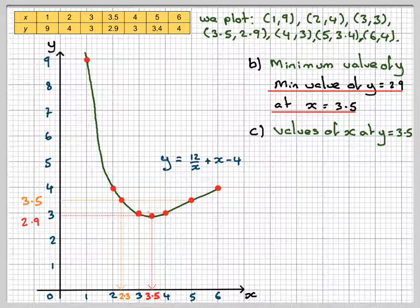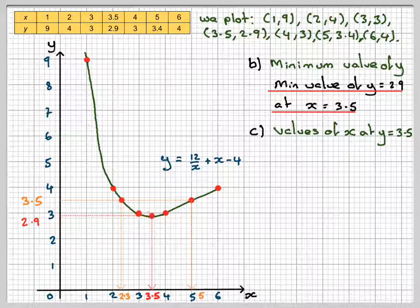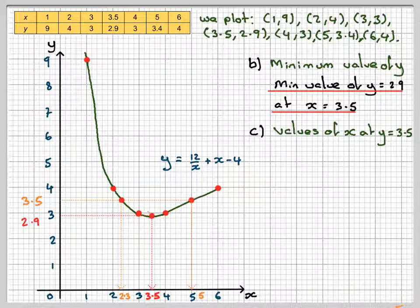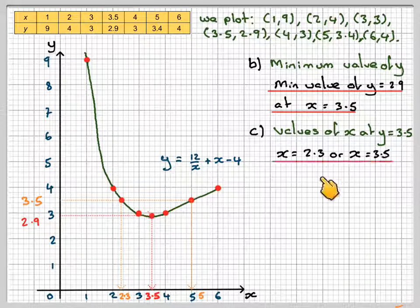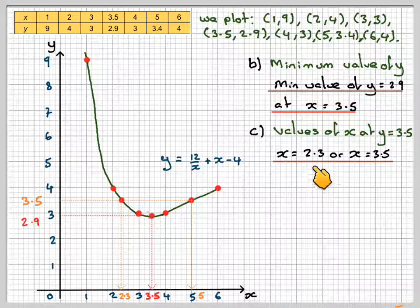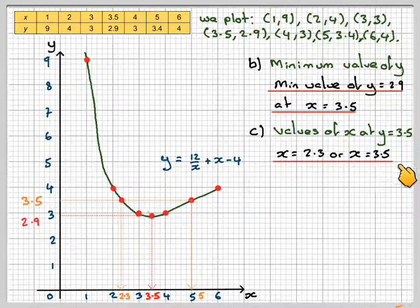The other value we already know is 5. Therefore, we can say x = 2.3 or 5.